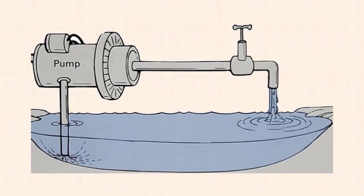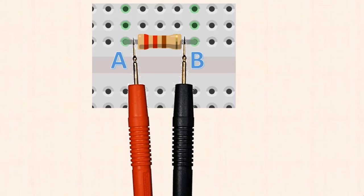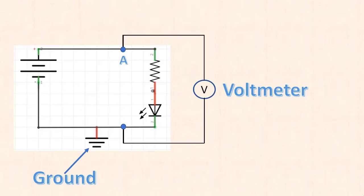One more important point: when we measure voltage, or someone says the voltage at point A is 5 volts, we're measuring voltage with respect to something. For example, when measuring voltage across the resistor, we're measuring the voltage from point A with respect to point B, or one end of the resistor to the other. Often you'll measure voltage with respect to ground, which is the lowest voltage in a circuit, usually 0 volts. So if I wanted to measure the voltage at point A, I put one end of my meter at point A and the other at ground.